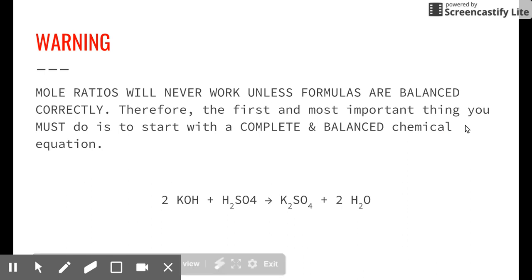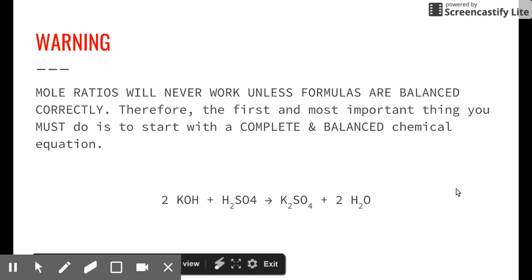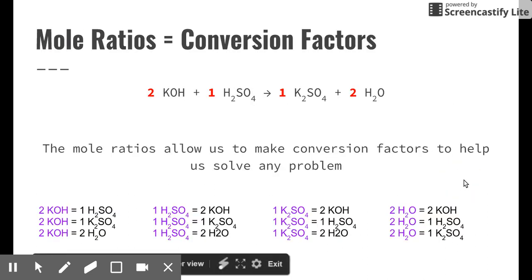Big warning: stoichiometry will be impossible if you cannot correctly write and balance a chemical formula. You need to know how to cancel charges for each reactant and product, and then correctly assign coefficients. If you can't do that, you'll never be able to use mole ratios correctly.